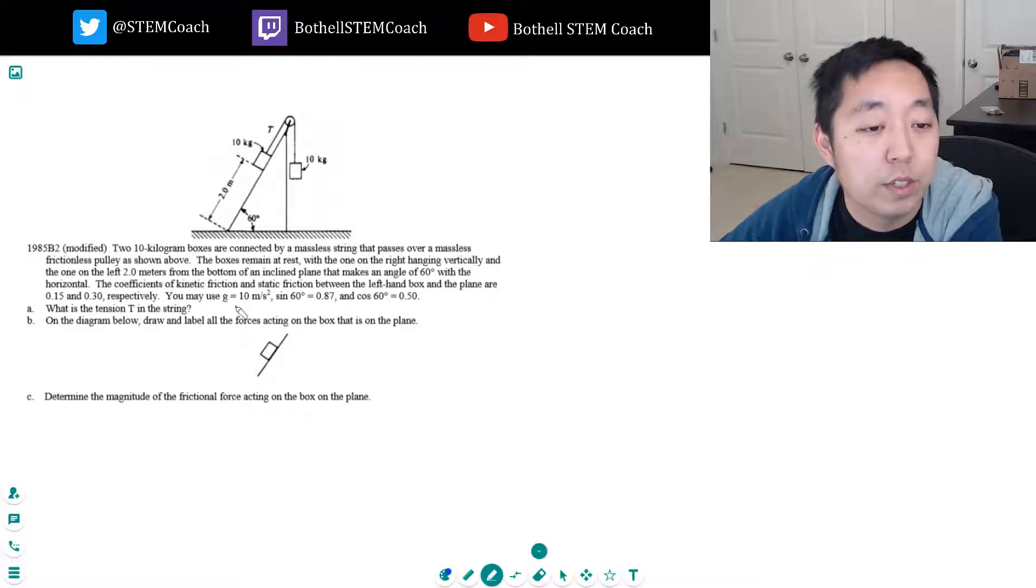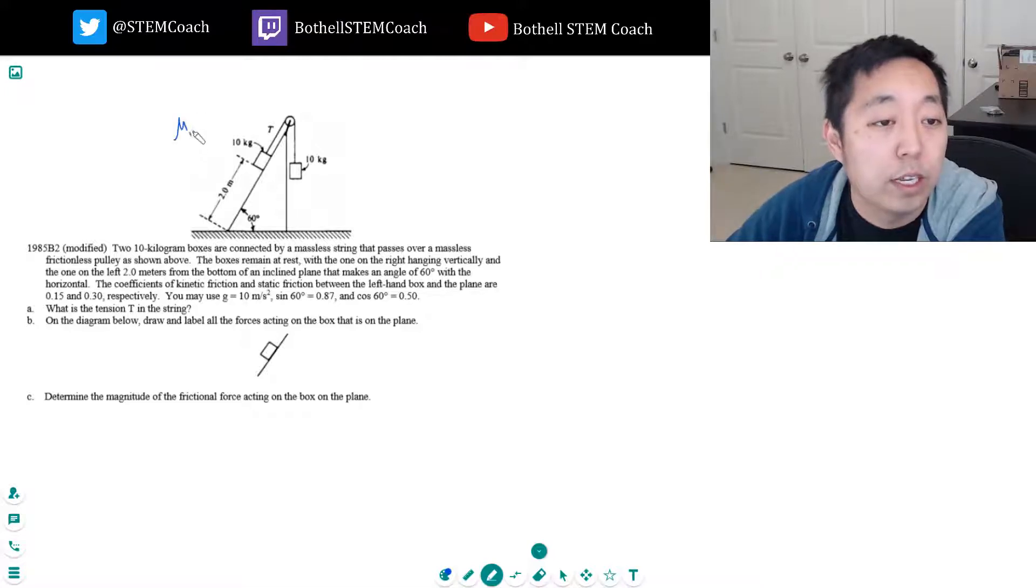The coefficients of kinetic friction and static friction between the left-hand box and the plane are 0.15 and 0.30 respectively. The kinetic friction is 0.15 and the static friction is 0.30. You may use g equals 10, sine is 0.87, and cosine is 0.5. This is the old days when you weren't necessarily expected to have your calculator on the test, so you kind of had to compute these by hand.